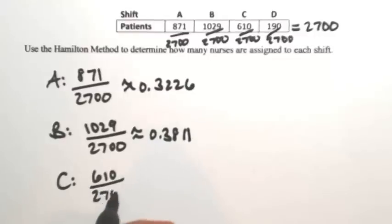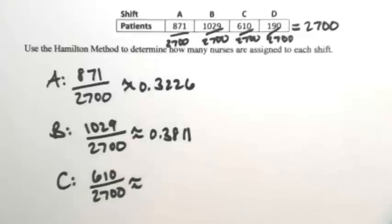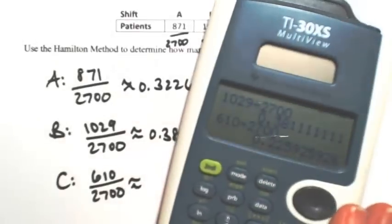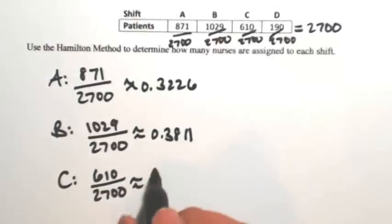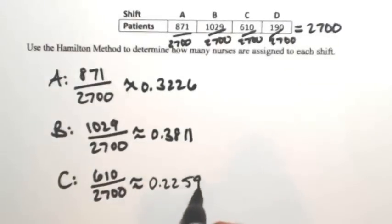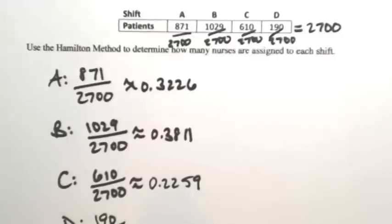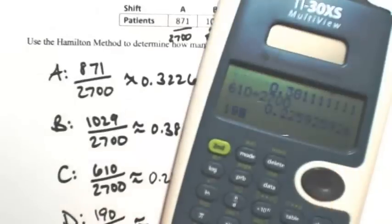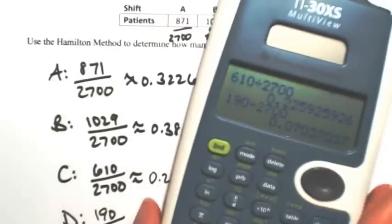For C, we have 610 divided by 2,700, so dividing that out I get about 0.2259. And then for shift D, 190, so this one has the lowest amount, divided by 2,700 is about 0.0704.